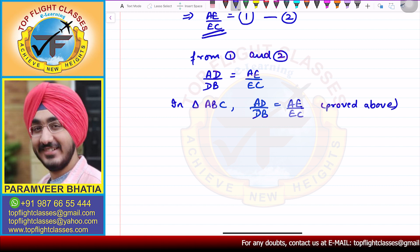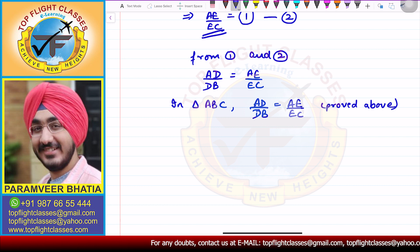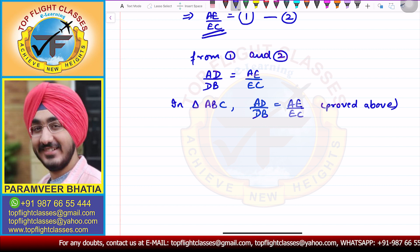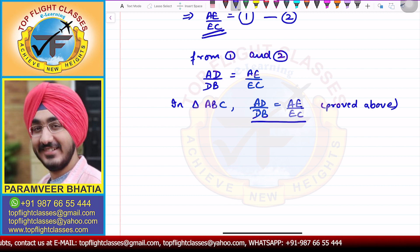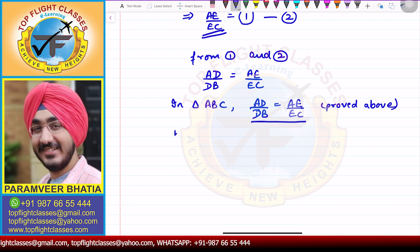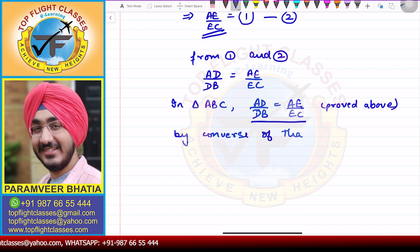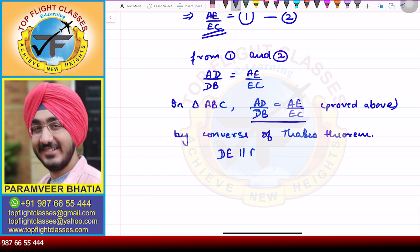Now, what does the Converse of Thales' Theorem say? It says that if a line divides the two sides of a triangle in equal ratios, then it is parallel to the third side. So here, by the Converse of Thales' Theorem, we get that DE is parallel to BC.